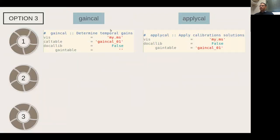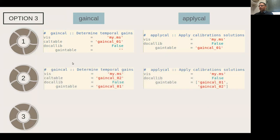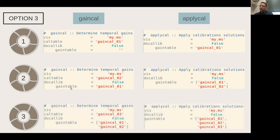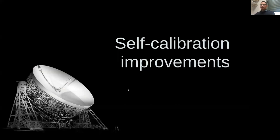In the incremental approach, the first table has the largest corrections, the second has second-order corrections, and the third has even smaller corrections. At some point the corrections become noise — meaning you've corrected everything you can. This is preferable to computing each table from scratch, because amplitude self-calibration needs longer solution intervals, and without applying previous phase corrections first, amplitude corrections will try to compensate for phase incoherence, which is not real.